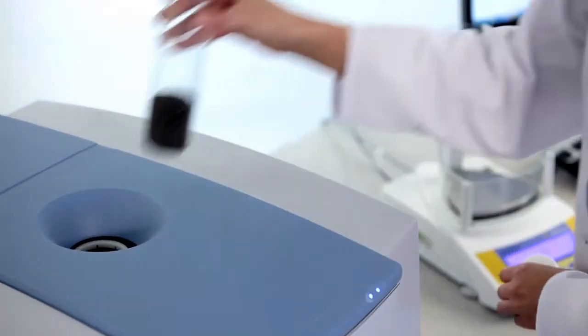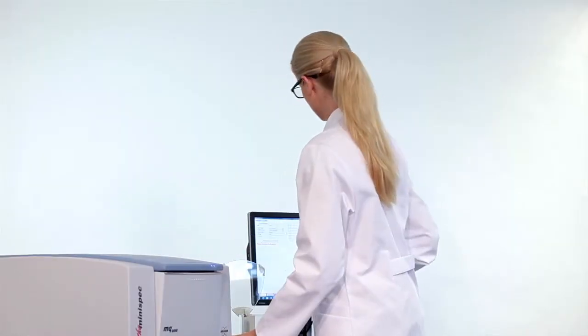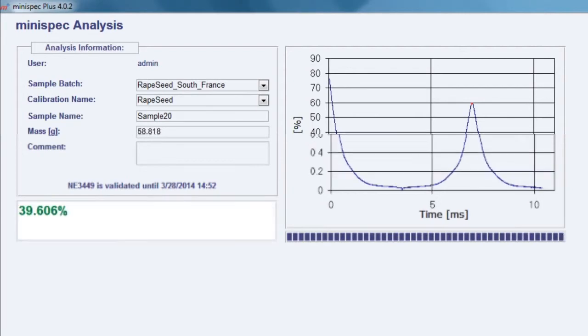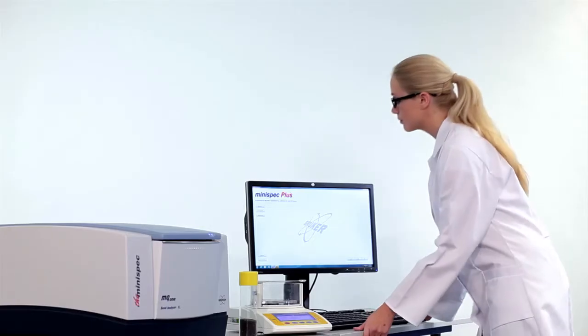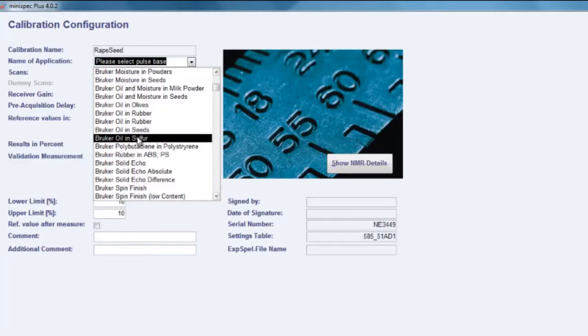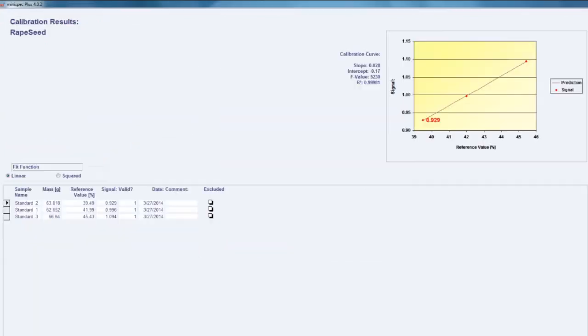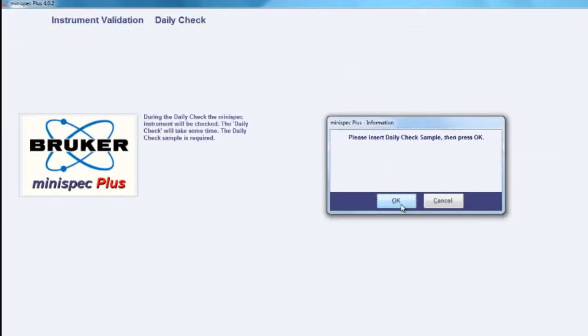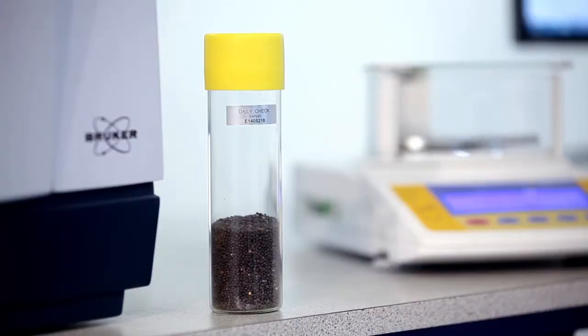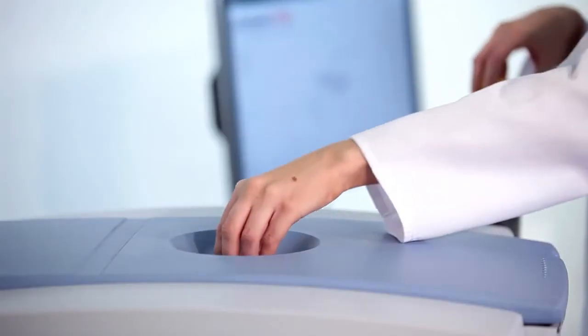The results are shown within seconds. Upon installation, the system is calibrated with three to five samples of the respective seeds. In this example, a set of three certified calibration standards for rape seeds were measured. Only once a day, the minispec is validated with Bruker's daily check sample.